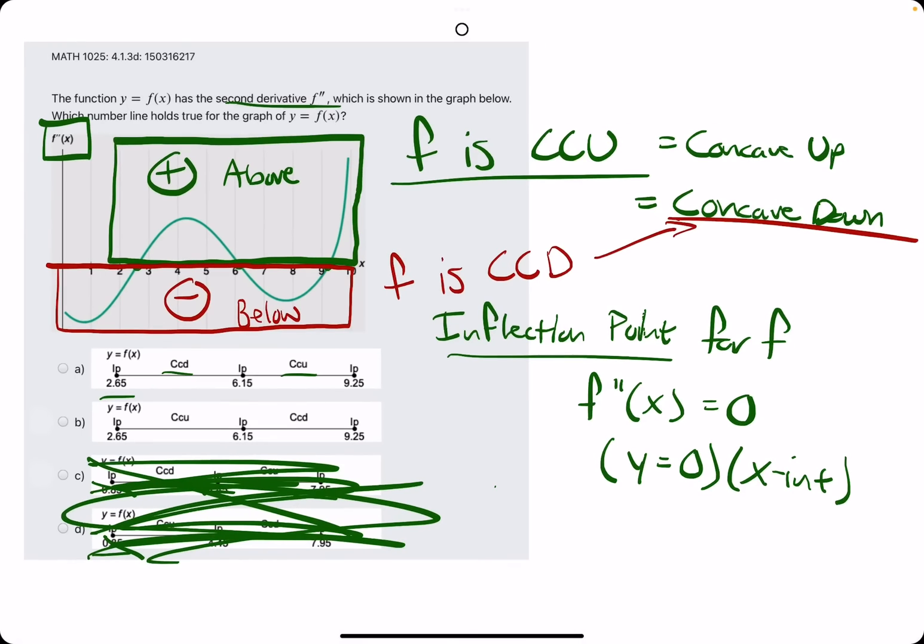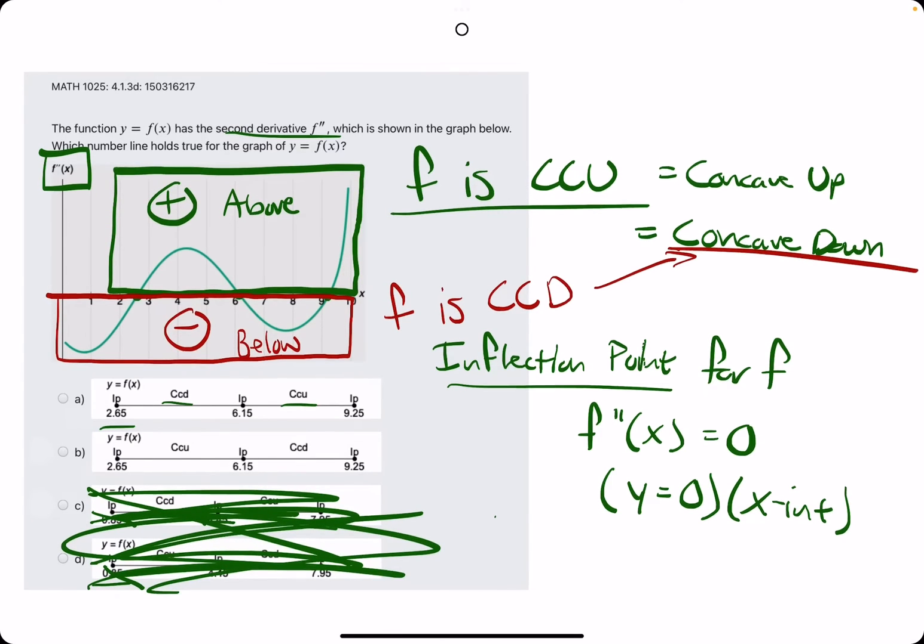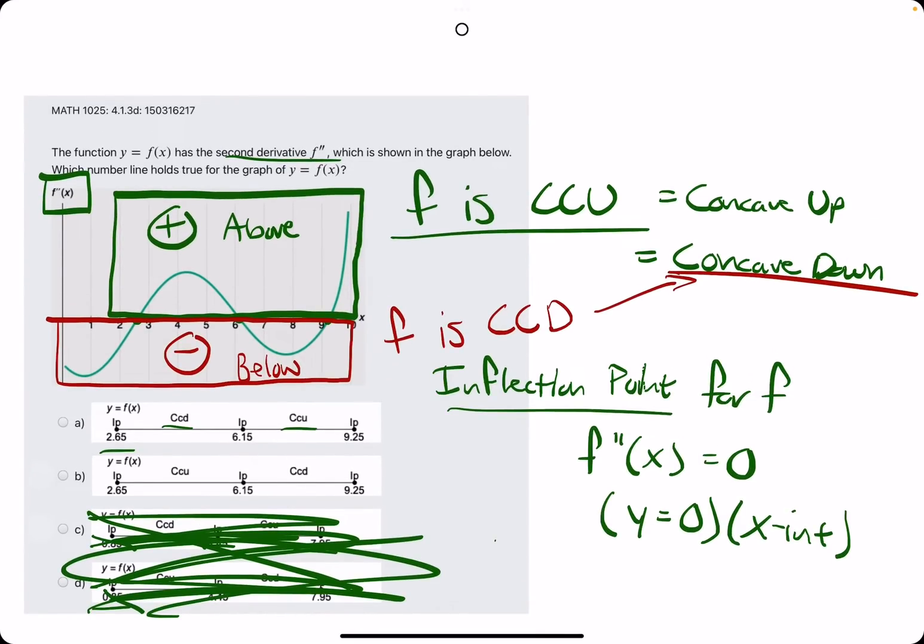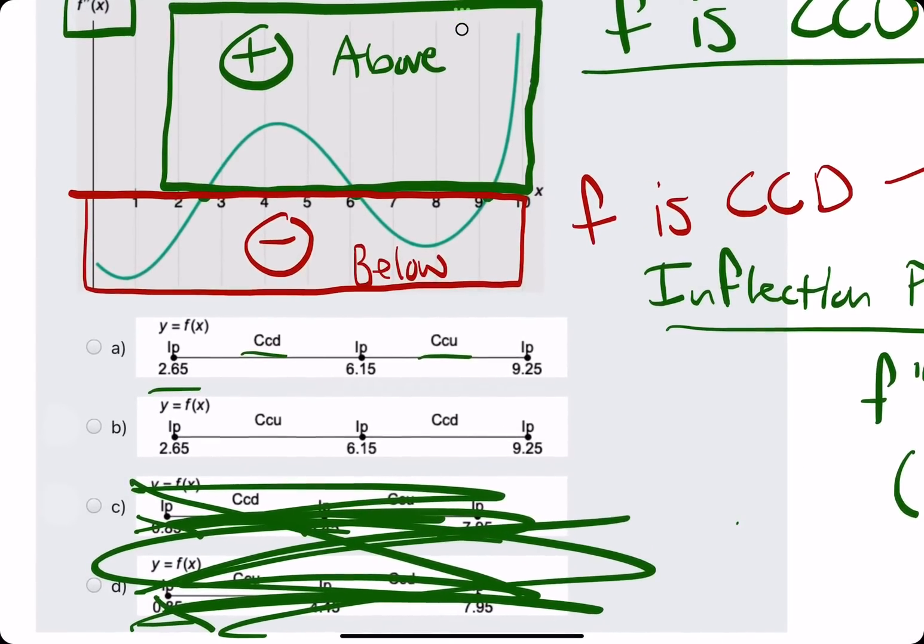So whenever f'' is negative or below the x-axis, the original function f is concave down. Whenever the second derivative is positive or above the x-axis, f is concave up. That's the idea.